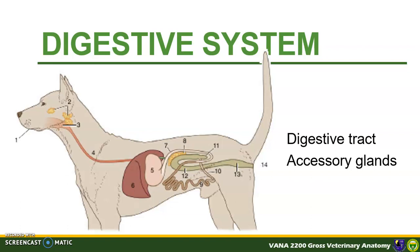The digestive system of the dog is described as monogastric, meaning they have a simple single-chambered stomach. Their digestive tract is relatively short in contrast to other domestic animals.